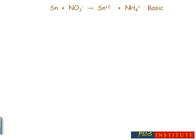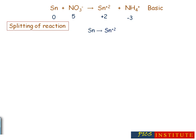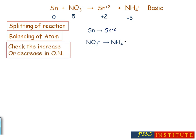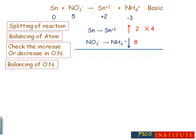Now let's take the same reaction in basic medium. The oxidation numbers are noted and the first step is splitting of the reaction in the same way. Second step: balancing of atoms other than oxygen and hydrogen — no need since all atoms are balanced. Check increase or decrease in oxidation number: for the first equation it is two units; for the second equation it is eight units. Now balance the oxidation number by multiplying with a suitable number — multiply equation number one by four to get the equation.